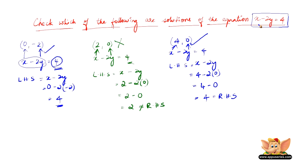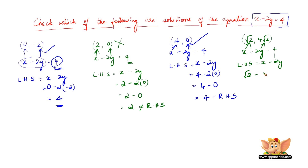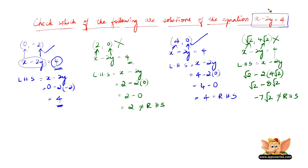Now let us consider one more example, which is slightly different: (√2, 4√2). We substitute x as √2 and y as 4√2 into LHS = x minus 2y. We get √2 minus 2 into 4√2, which is √2 minus 8√2, giving us minus 7√2. This is definitely not equal to the RHS, which is 4. Therefore (√2, 4√2) is not a solution of x minus 2y equals 4.